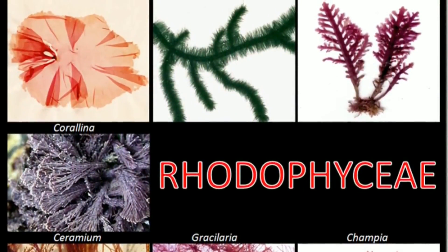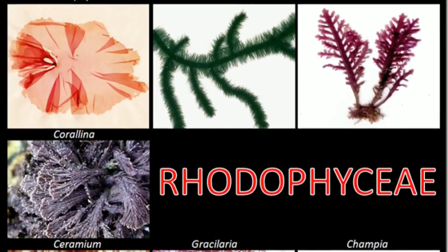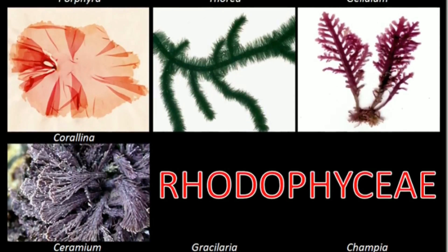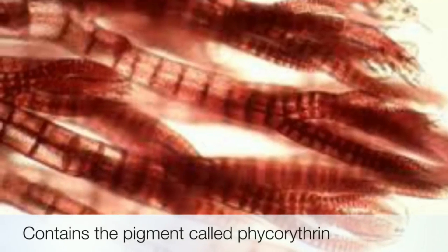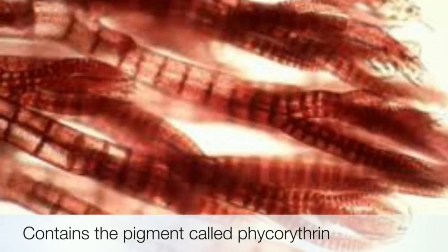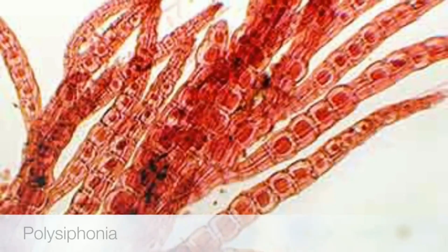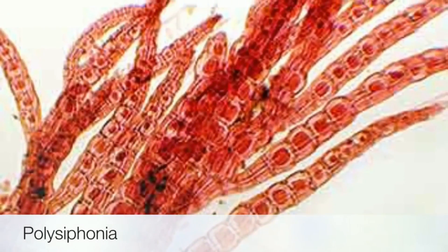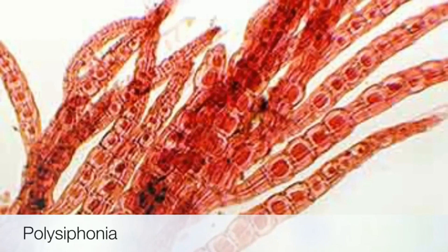Another type of algae is Red Algae, also known as Rhodophyceae. They contain a pigment called Phycoerythrin, which is responsible for the red color. Examples include Polysiphonia and Batrachospermum.